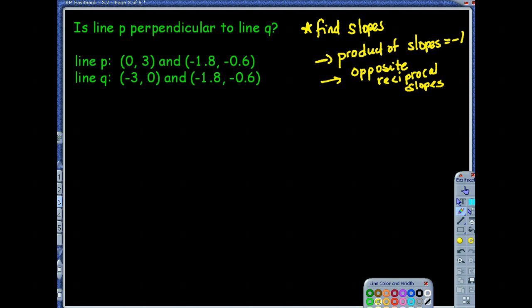So we got lines P and Q. So let's start with line P and its slope. We can use a slope formula. The slope formula allows you to basically find the difference between the Ys, the difference between the Xs. So I'm going to take negative 0.6 minus 3, that's my difference in my X values, over negative 1.8 minus 0. So on top I get a negative 3.6 over a negative 1.8, which when I divide that I'll get 2.